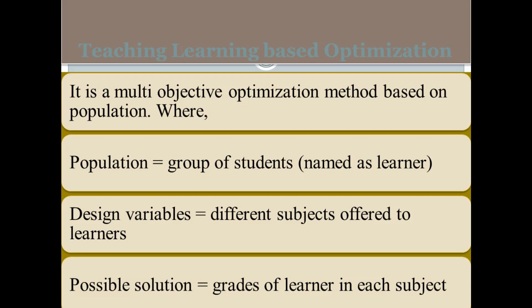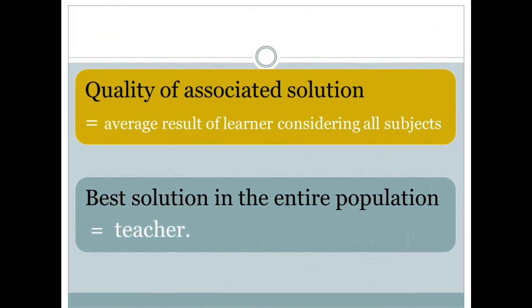The population means a group of students, which we are calling learners. We have design variables, meaning the subjects offered to the learner. Possible solutions are the grades of learners in each subject. We are trying to find a solution by mapping to the social behavior observed in teaching-learning. The quality of the solution is the average result of the learner considering all subjects, and the best solution is the solution of the teacher — the highest learned person having maximum knowledge.